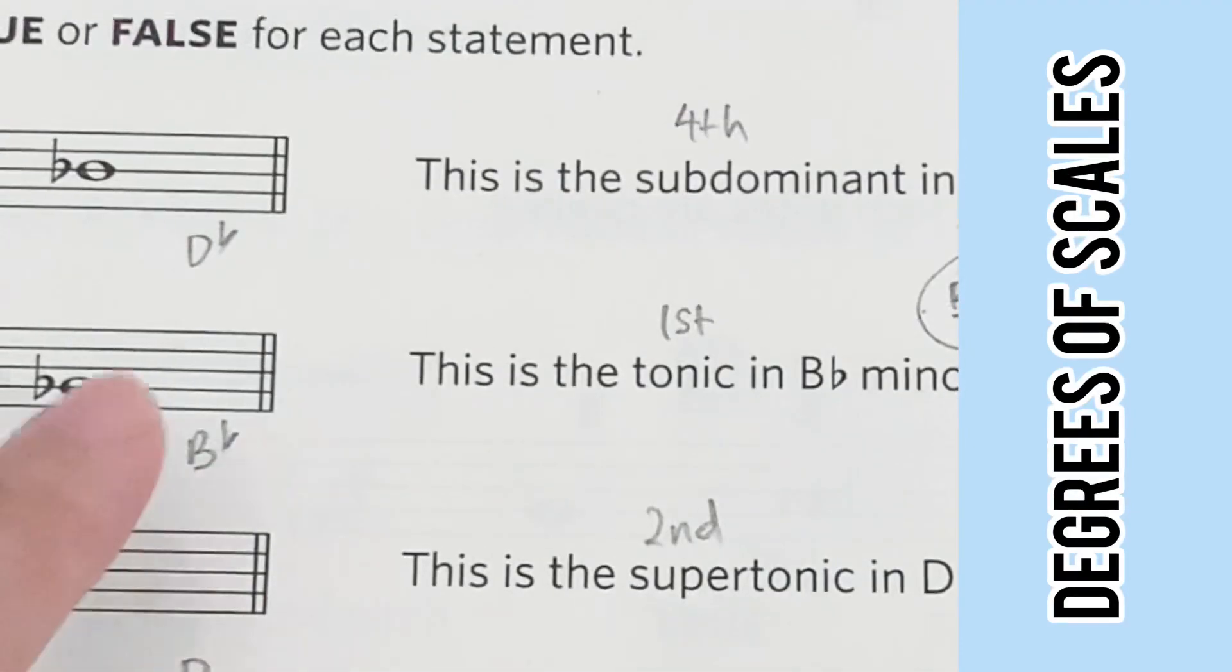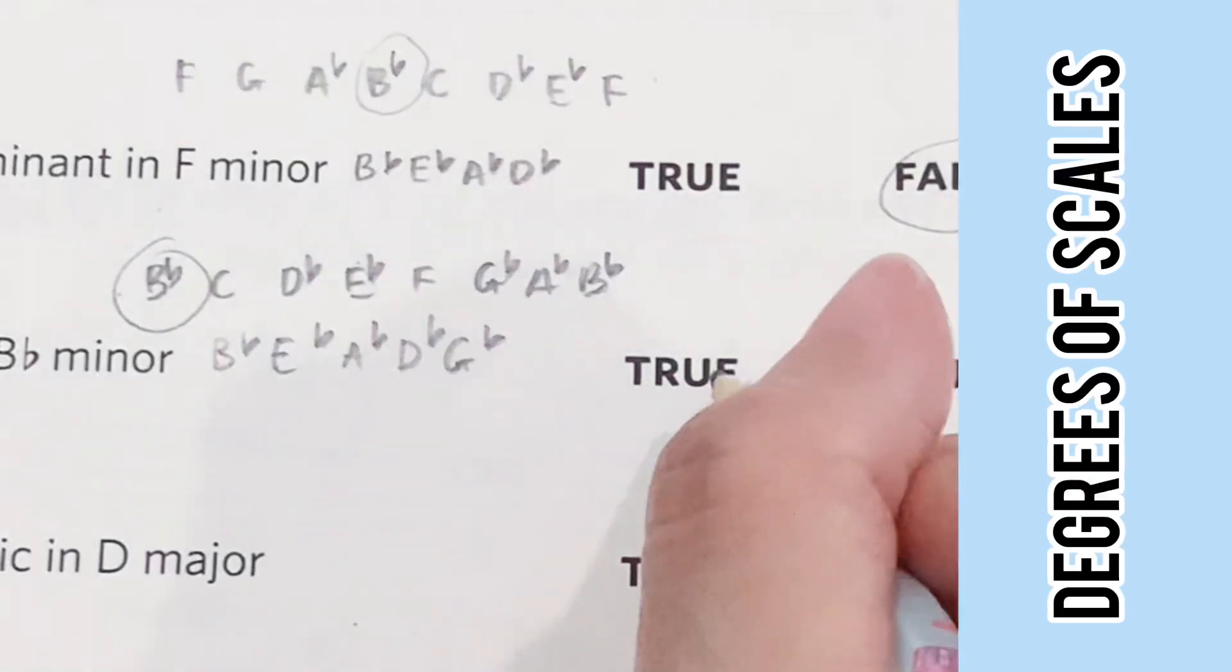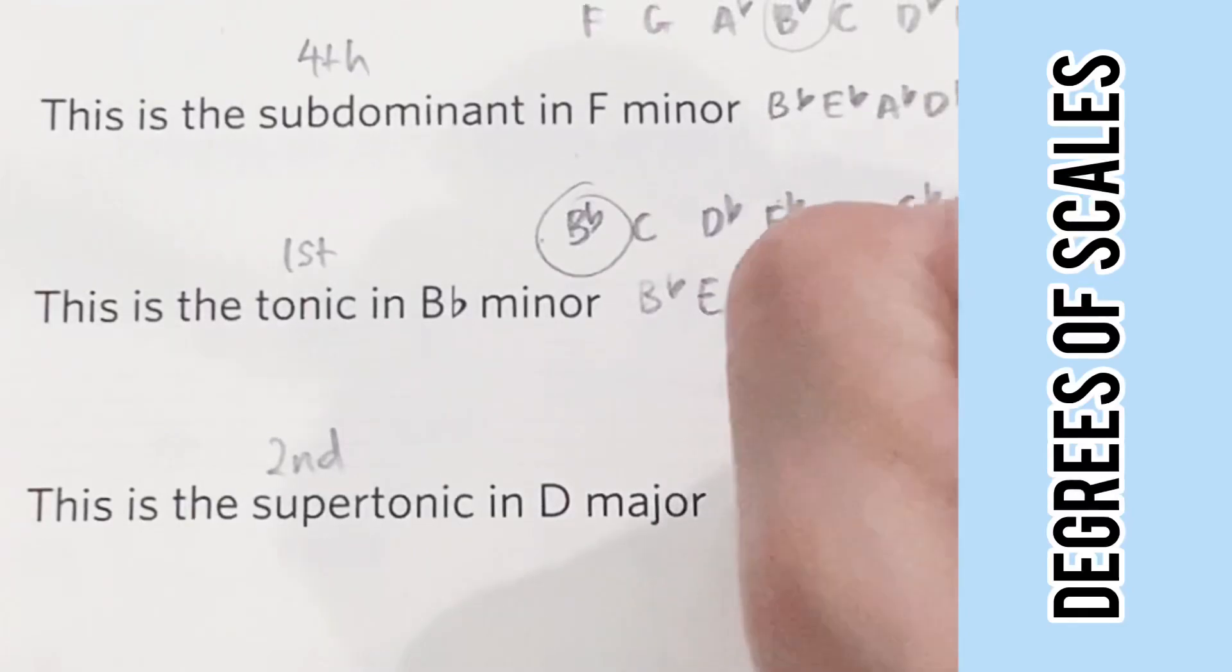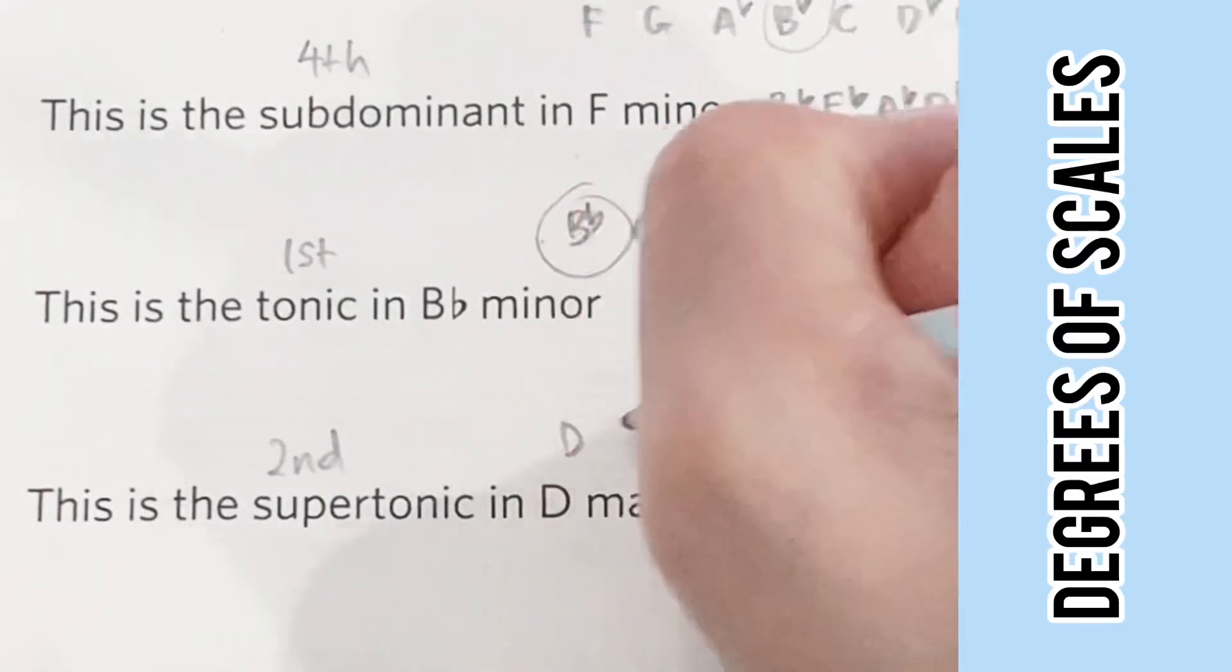The first note of the scale would be tonic, so it's B flat. Onto the final question, we have D major which has F sharp and C sharp.